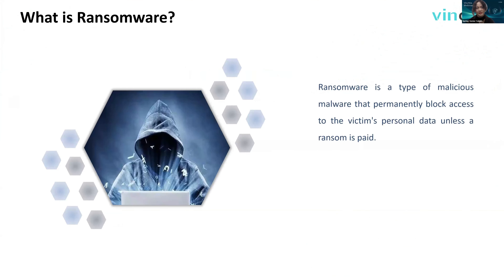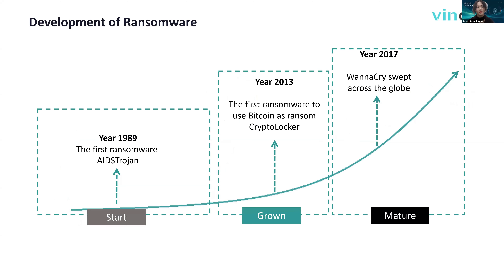So what's ransomware? Here we have a definition: ransomware is a type of malicious malware that will permanently block access to the victim's personal data unless a ransom is paid. Looking at ransomware history, the first ransomware was born in 1989. Until 2013 was a true turning point — the CryptoLocker ransomware emerged as the first encryption ransomware to use Bitcoin for ransom payments. Later in 2017, WannaCry spread to more than 150 countries, and since then ransomware has been industrialized.